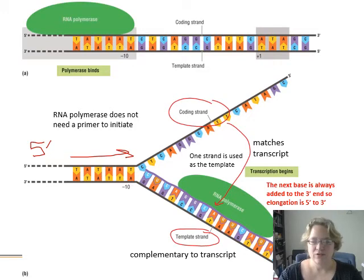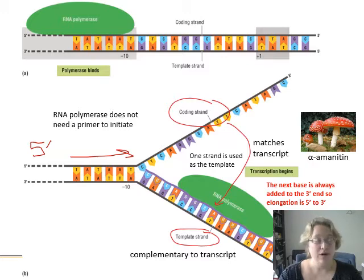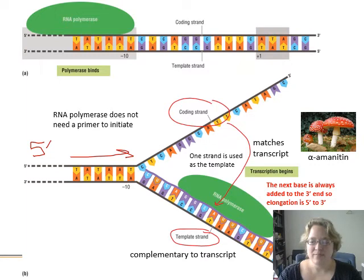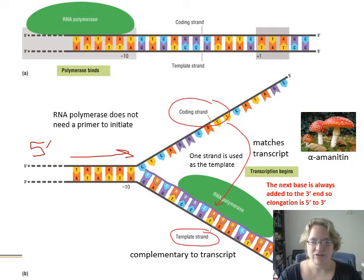The next base is always added to the three prime end, so elongation is five prime to three prime. Why do mushrooms kill you? They stop this process from working. The key protein in the Amanita mushrooms, called alpha-amanitin, blocks RNA polymerase from adding base pairs to mRNA transcripts, and so that kills you very quickly.